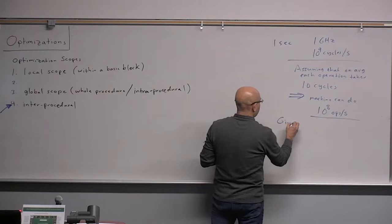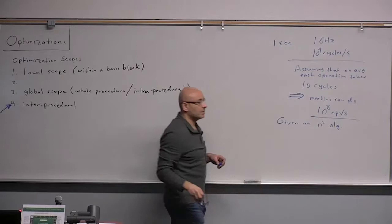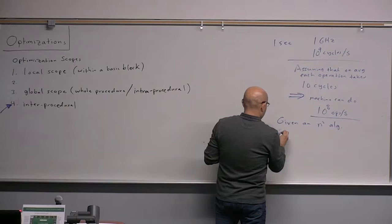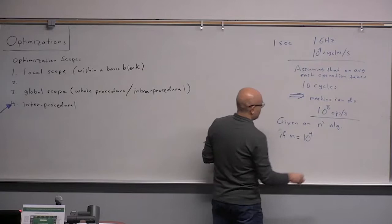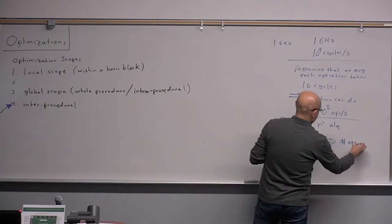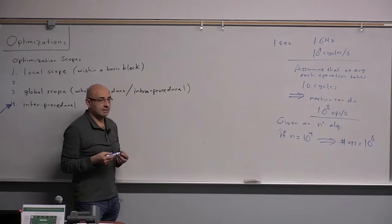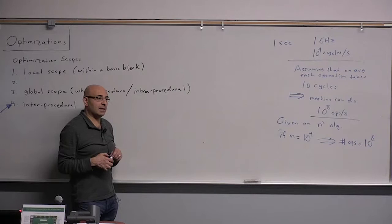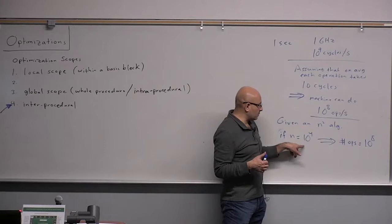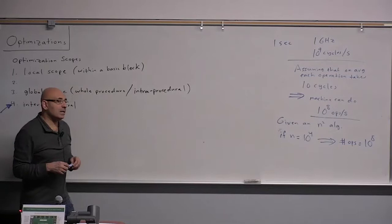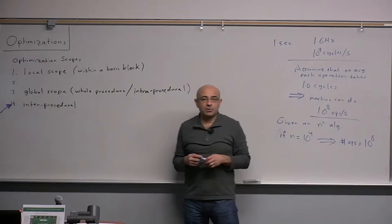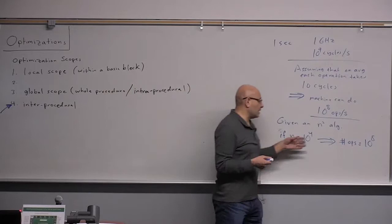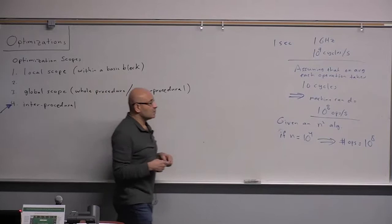Given an N-squared algorithm, if N equals 10 to the power of 4, the number of operations equals 10 to the power of 8, which is what the computer can execute in one second. So with an input size of 10,000, an N-squared algorithm completes within one second. But how many instructions does a large program have? A large program has more than 10,000 statements, more than 10,000 instructions.